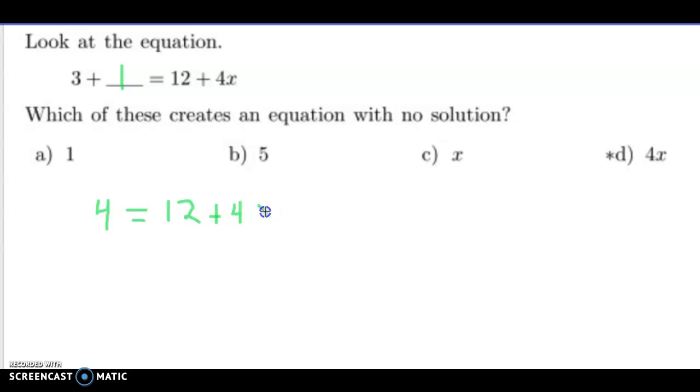Now notice, I can still get the x's by themselves by subtracting 12 on both sides. If I subtract 12 on both sides, I get negative 8 equals 4x. I divide both sides by 4, and I get x equals negative 2. Well, guess what? That is one solution. And I'm not looking for one solution, so that doesn't work.